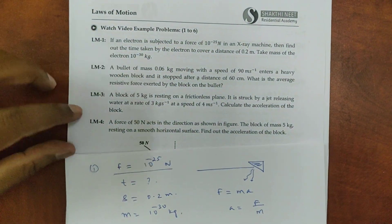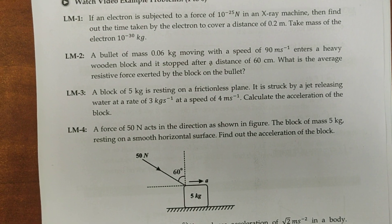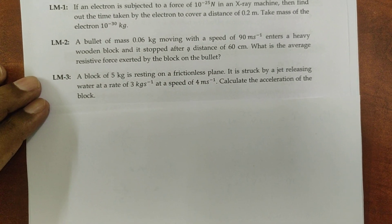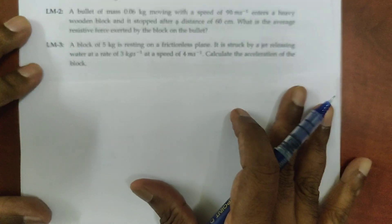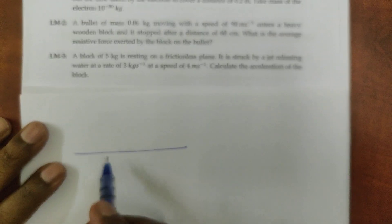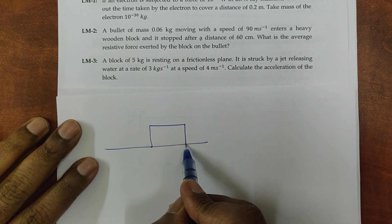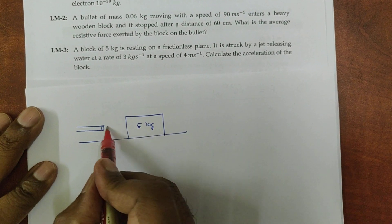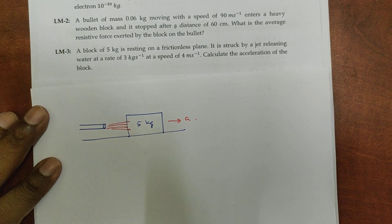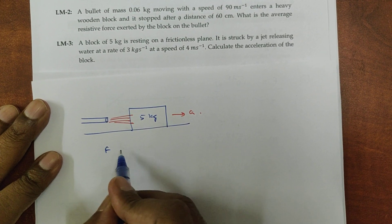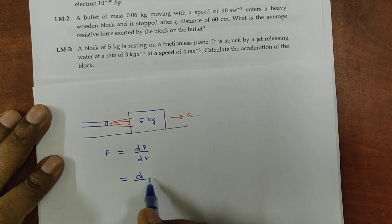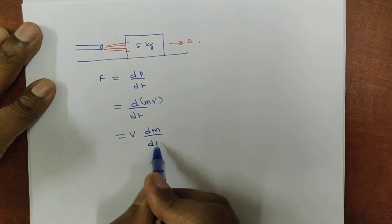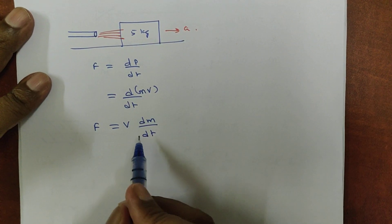Problem 3: A block of 5 kg is resting on a frictionless surface. It is struck by a jet releasing water at a rate of flow of 3 kg per second at a speed of 4 meters per second. Calculate the acceleration of the block. Using Newton's second law — rate of change of momentum — force equals v × (dm/dt).